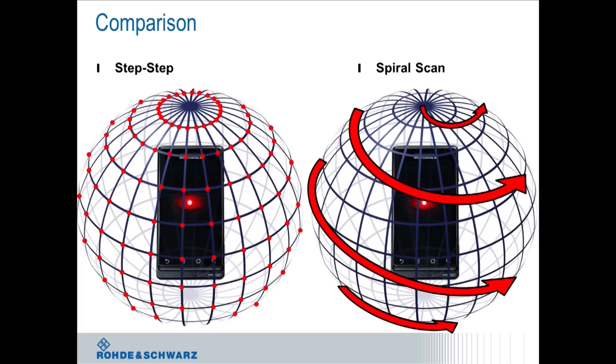The newest approach that we are implementing now is the spiral scan, where you basically move the device under test and the test antenna in a continuous motion. And in this case, you're taking points at random positions on the 3D sphere, but the movement is continuous. So that means you're not stopping during the measurement at all.